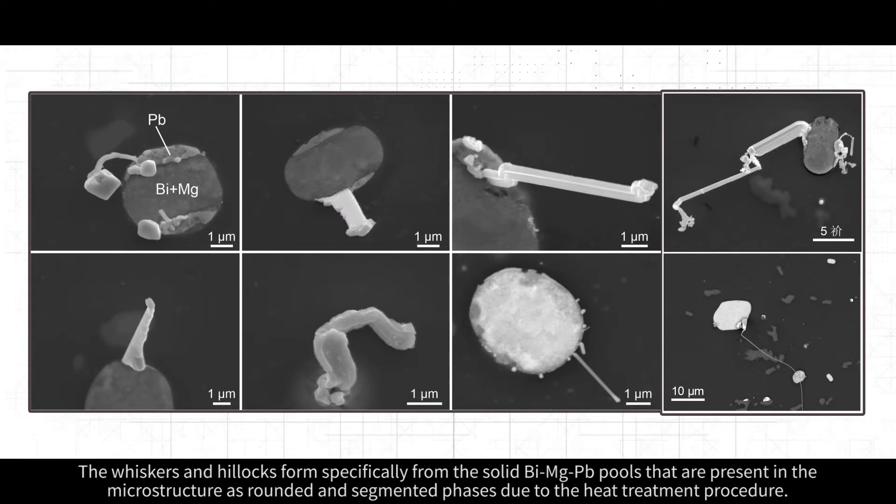The whiskers and hillocks form specifically from the solid bismuth-magnesium-lead pools that are present in the microstructure as rounded and segmented phases due to the heat treatment procedure.